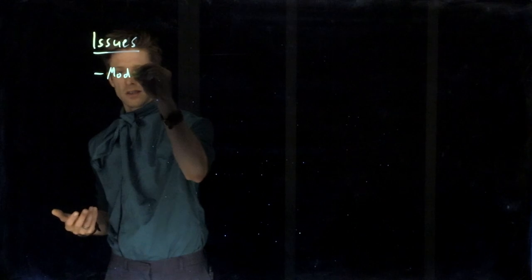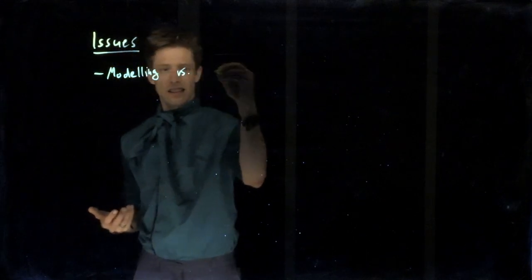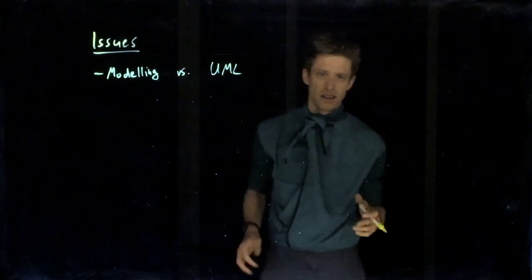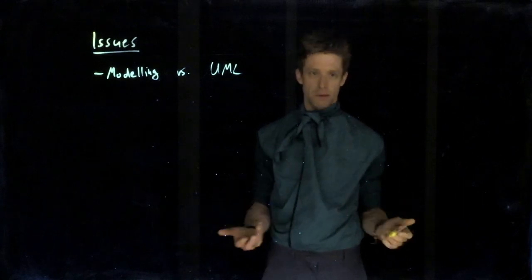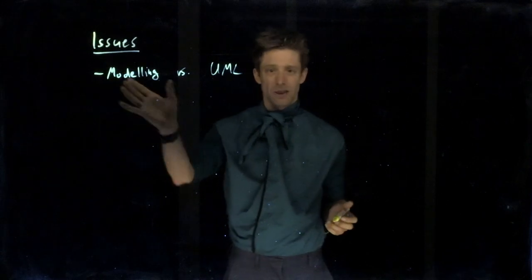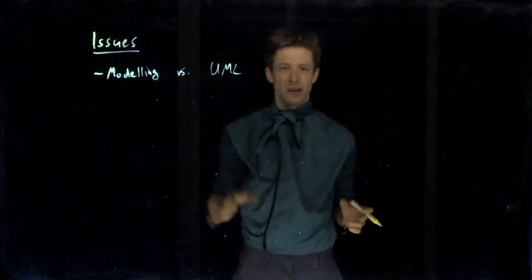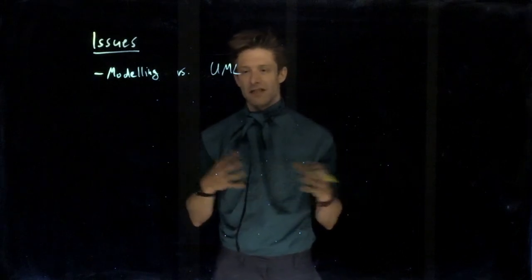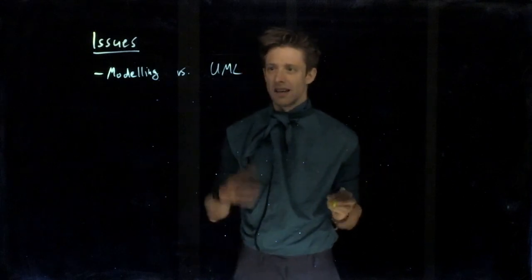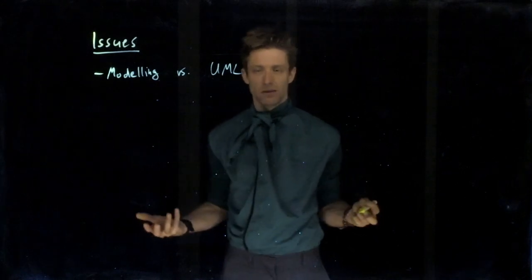The first one is that software modeling is very often equated with UML. So when you say modeling, people think UML and they don't like UML because UML is very complicated. You need to understand that you can do a lot of things that are not UML. And even if you use UML, you can do it in a very sketchy, very abstract way. You don't always have to use the right arrows or the right notation, as long as that fits the purpose and the people involved.